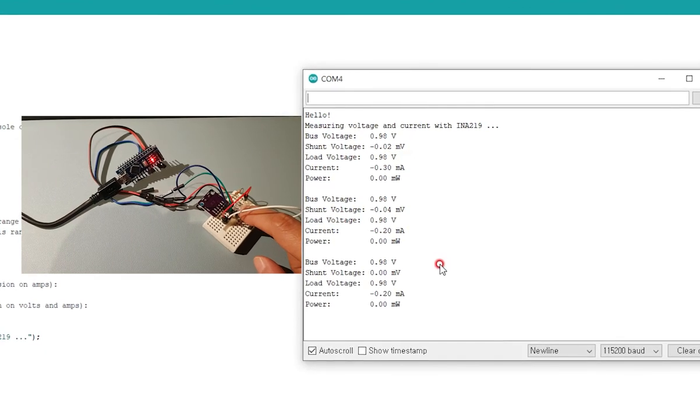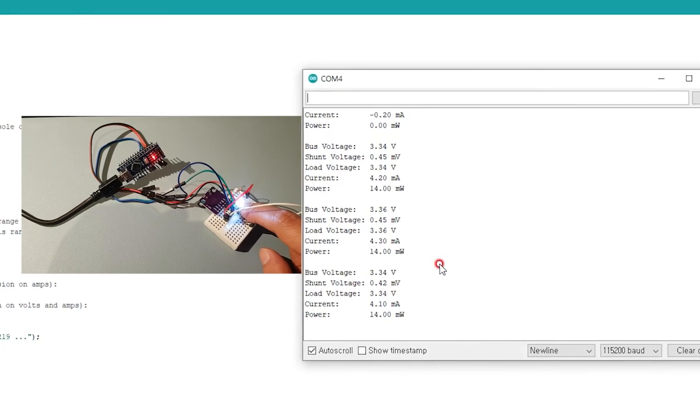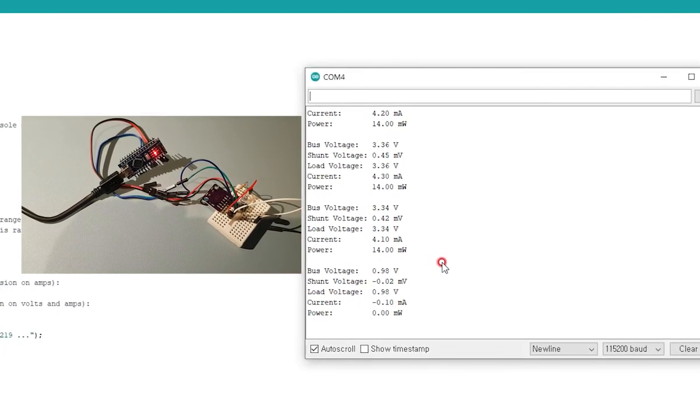When I press the push switch, LED turns on, and you can see the current and voltage of the load. If the switch is released, the LED turns off, and the current value returns to 0.